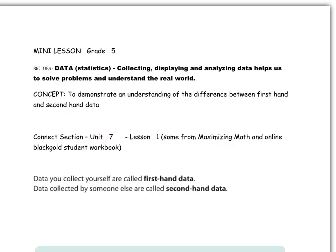There's also some from Maximizing Math and the online Black Gold Student Workbook. First and foremost, data collected by yourself is called first-hand data. So if it's collected yourself, it's first-hand data. Data collected by someone else are called second-hand data.